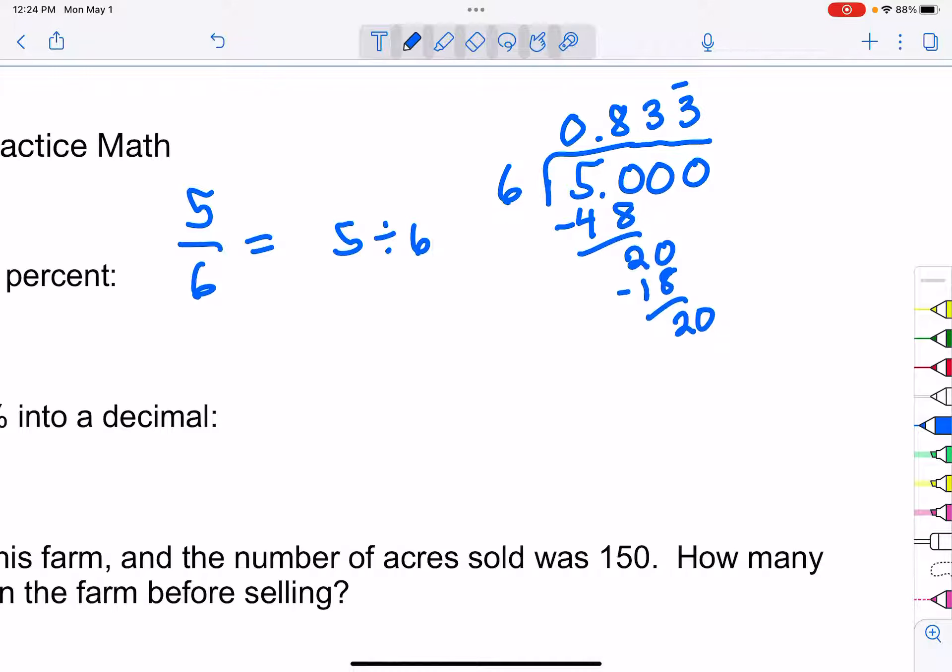Now from here, the decimal point 8.33 repeating, to change into a percent is a pretty easy procedure. We're just going to move the decimal place two to the right. Technically you're multiplying by a hundred, you're asking how many is there per hundred, so you just move it over two places and so we get 83.3 percent. So to change a decimal into a percent you're going to move the decimal two places over. To change a fraction into a percent, make the fraction into a decimal and then move the decimal place two places to the right.